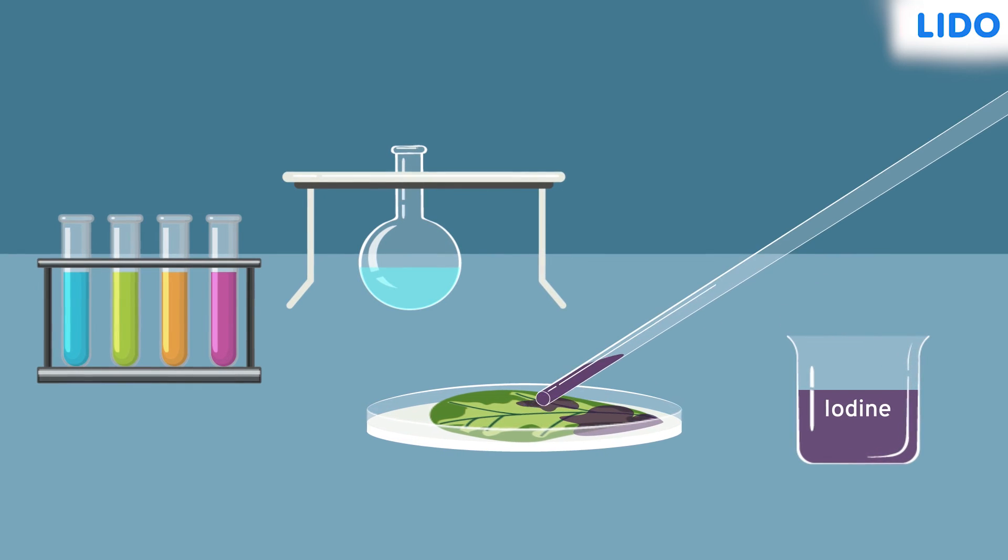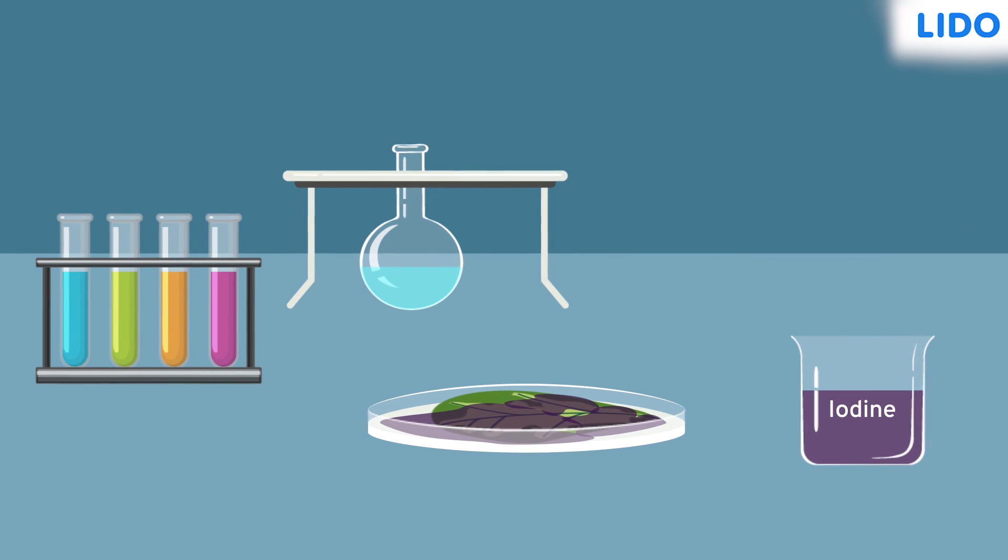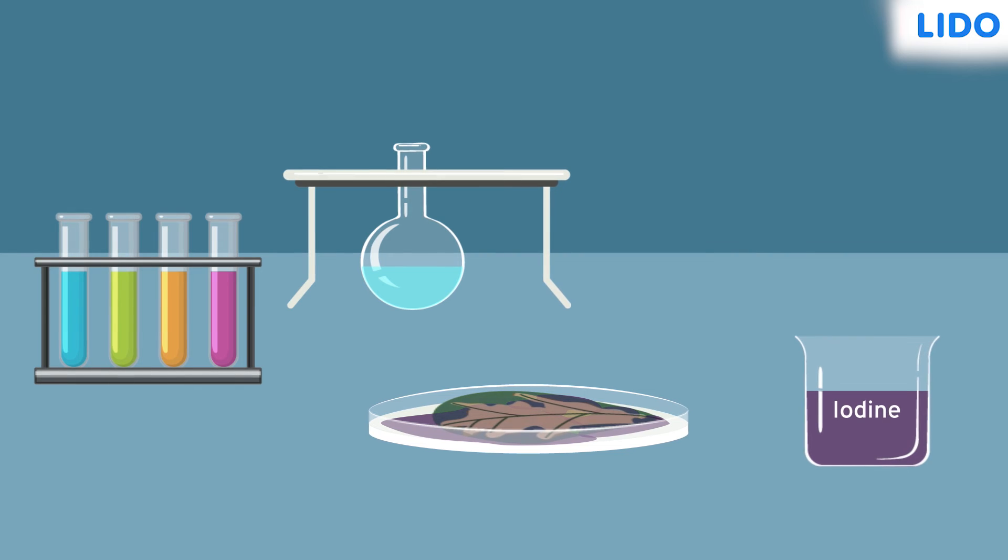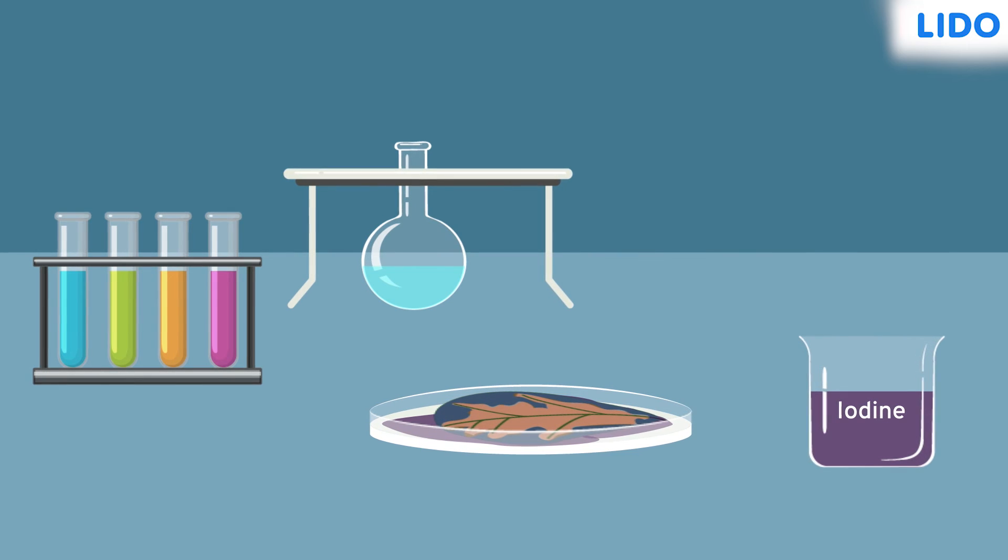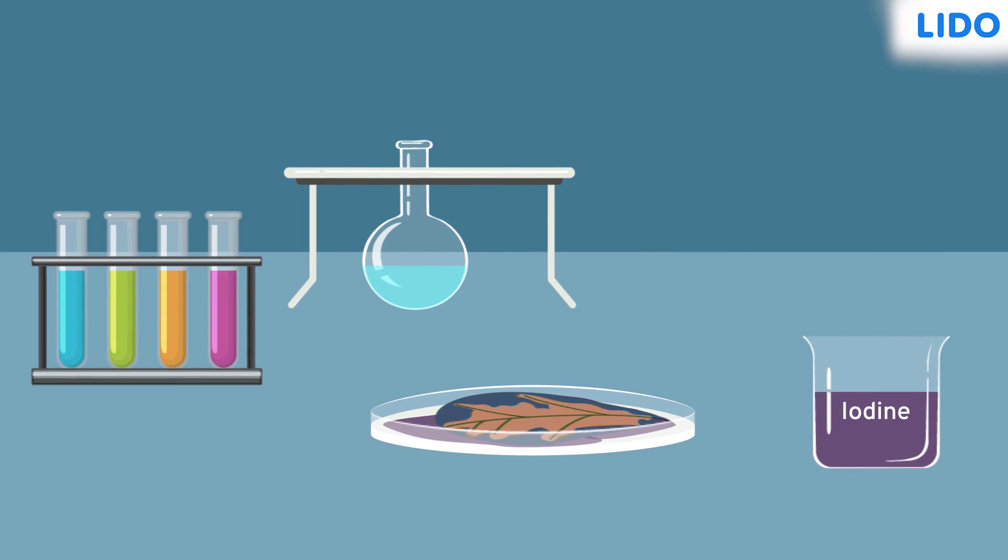When she put the iodine solution on the leaf, only the outer green portion became blue-black. The inner yellow portion remained pale.